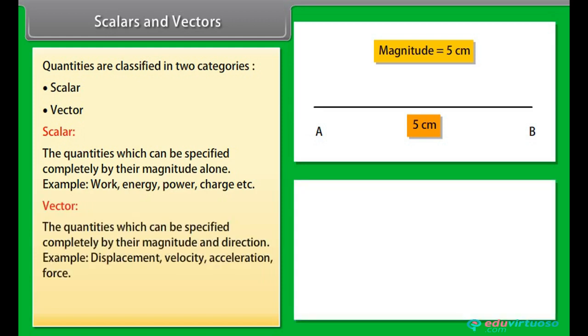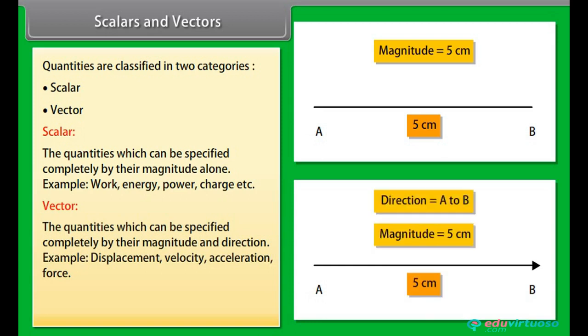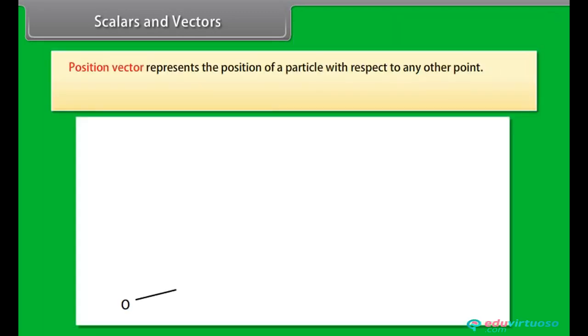Vector: The quantities which can be specified completely by their magnitude and direction. For example, displacement, velocity, acceleration, force. The geometric representation of a vector is done by an arrow.